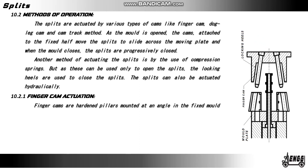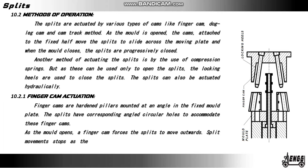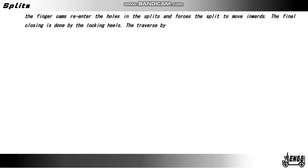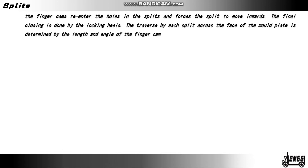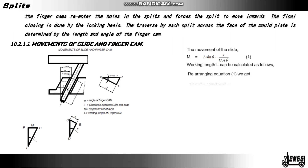Finger cam actuation: finger cams are hardened pillars mounted at an angle in the fixed mold plate. The splits have corresponding angled circular holes to accommodate these finger cams. As the mold opens, the finger cam forces the splits to move outward. Once contact with the finger cam is lost, further movement of the moving half causes the ejector system to operate. On closing, the finger cam re-enters the holes in the split and forces the split to move inward. The final closing is done by the locking heels. The traverse of each split across the face of the mold plate is determined by the length and angle of the finger cam.